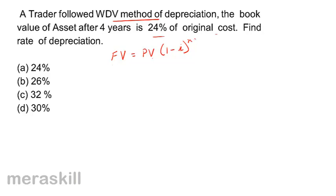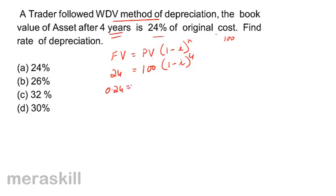Let us assume the present value of the asset is rupees 100. We know the future value is 24% of the original cost, so if the present value is 100, the future value is 24. Therefore, 24 divided by 100 gives 0.24, which equals (1 − i)^4.